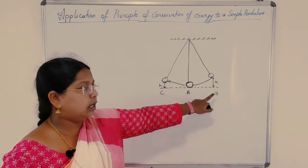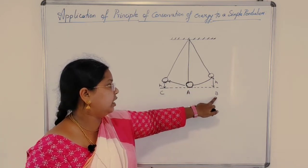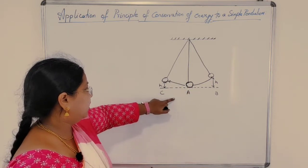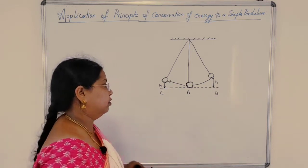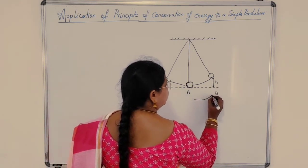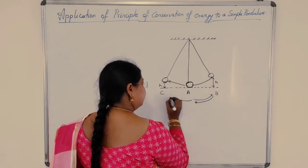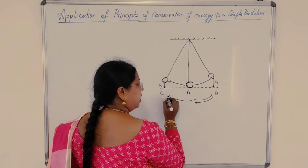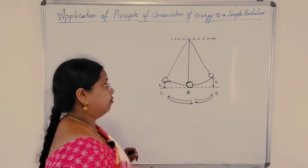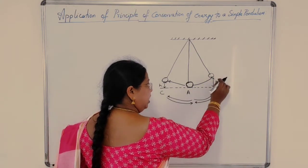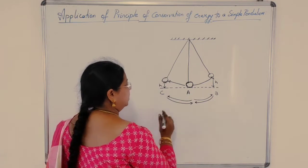The pendulum is moving from position A to B, then B to A, then A to C, and C to A again — continuously going to B, coming back from B to A, moving to C, and coming back from C to A. Listen carefully: when it is moving, one form of energy is converted to another form of energy.